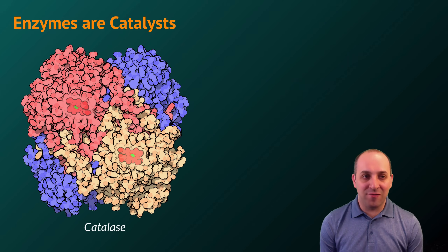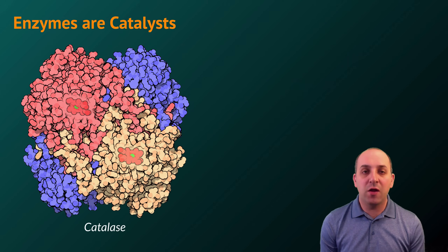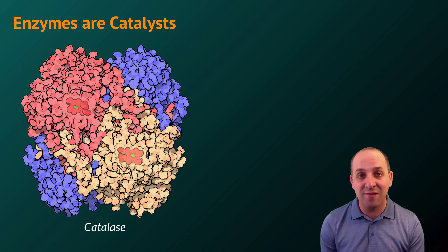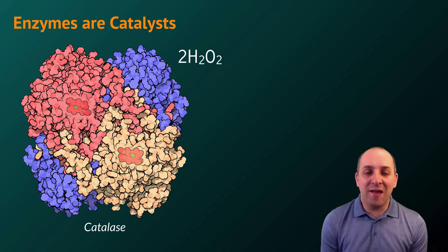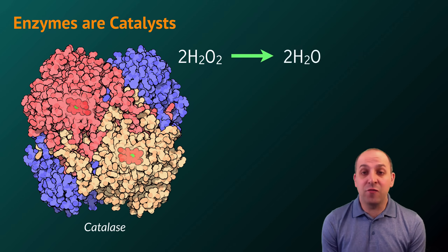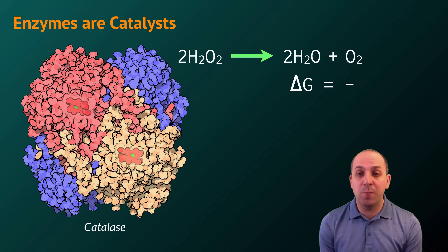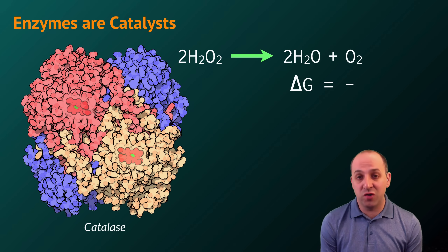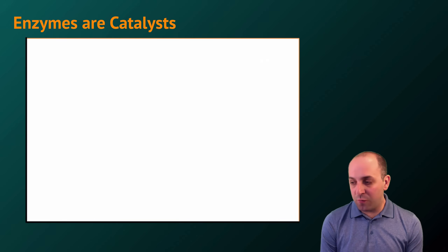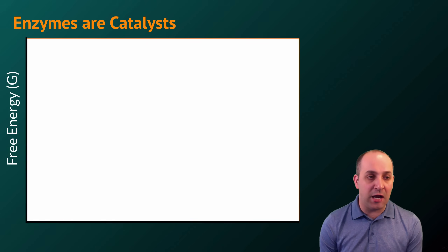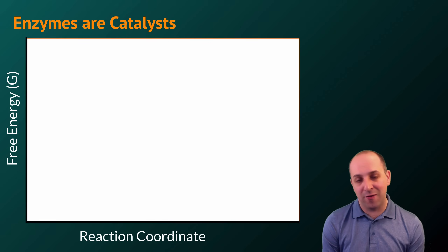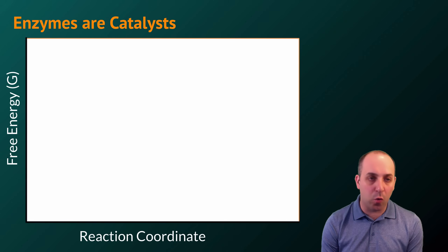Enzymes are catalysts. They are the molecules that are responsible for controlling many of the reactions that take place inside of cells. The catalase enzyme controls the conversion of hydrogen peroxide to water and oxygen, which is an exergonic process. In order to understand how catalysts work, we should look at a free energy diagram. We'll put free energy on our y-axis and look at time, which we'll call the reaction coordinate, on our x-axis.